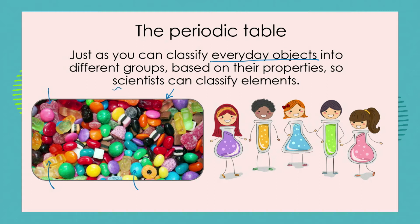In the same way scientists can classify the elements into different groups. They can sort them and they can organize them, and the principle of classification stays exactly the same. We are using properties or characteristics of the elements to sort them into their different groups.